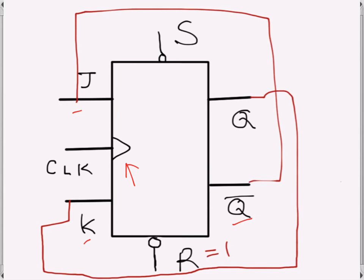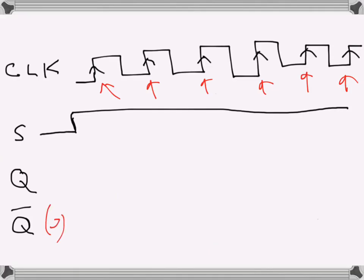S is initially low, which means Q will be set high. So Q will be one initially and Q̅ will be zero. That's how we start: Q is one and Q̅ is zero, meaning J is zero and K is one.